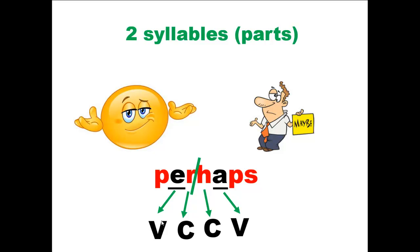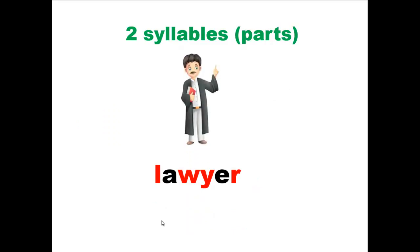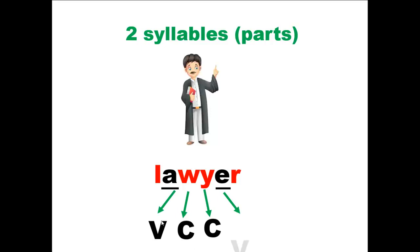Another example: flower. Here are the two vowel sounds. Let's check the pattern of the sounds. Be careful — you should always start with the first vowel sound. Here is the first vowel sound, then consonant, consonant, and another vowel sound. So this word follows the VCCV pattern and should be divided in the middle.